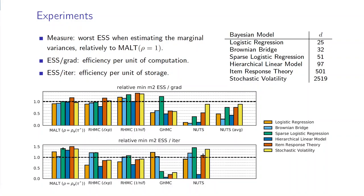This is the worst ESS when estimating marginal variances, and we use the same measure to compare different adaptive samplers on six different Bayesian models.